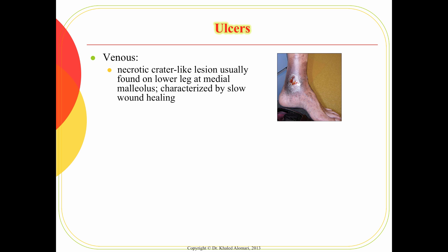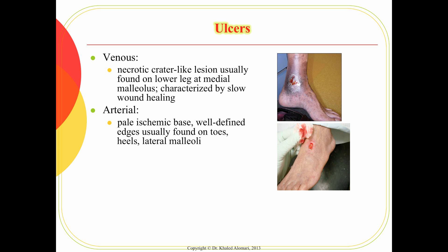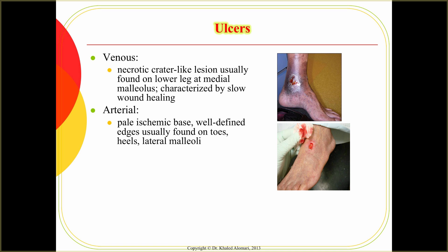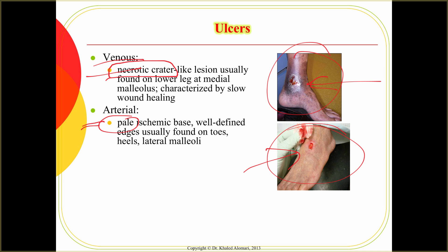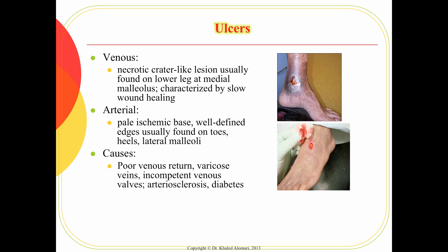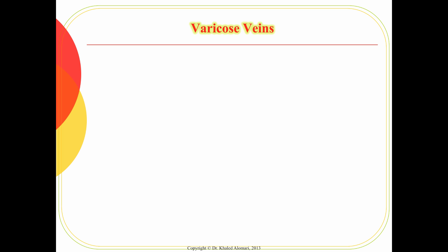Another finding is ulcers, and there are two kinds: venous ulcers and arterial ulcers. In both cases, these ulcers don't heal normally — they take longer to heal and may not heal at all. This is an indication of poor circulation. The venous type tends to appear more necrotic, while the arterial type looks more pale. You mainly see these in patients with impaired circulation in the lower extremities, such as diabetic patients.